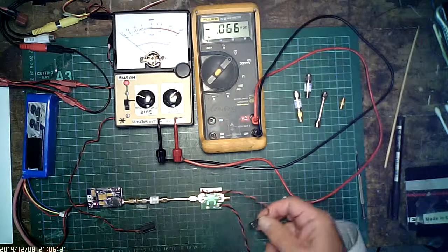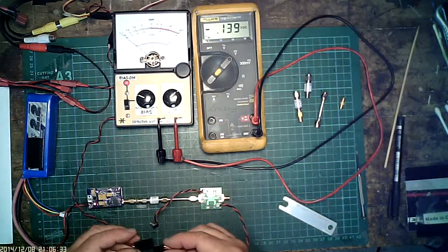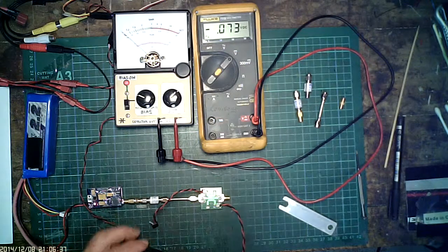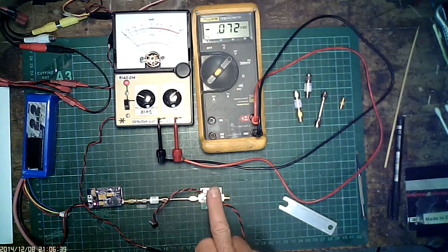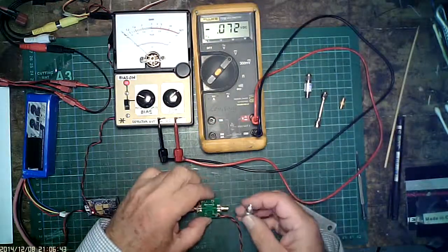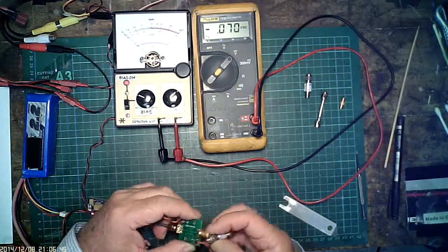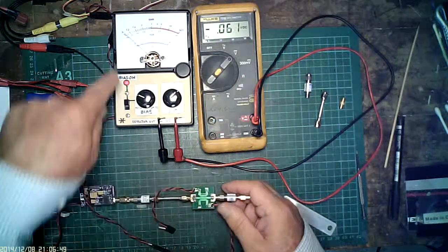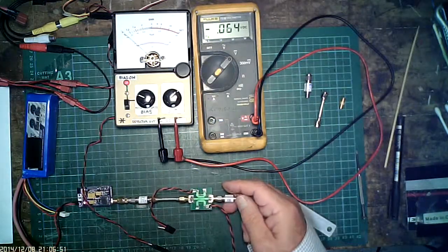And then if we measure on the other side, the other diode, next to nothing. We're going to put a termination on it. It should drop down completely to zero. It doesn't.